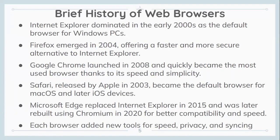Brief history of web browsers: Internet Explorer dominated in the early 2000s as the default browser for Windows PCs. Firefox emerged in 2004, offering a faster and more secure alternative to Internet Explorer. Google Chrome launched in 2008 and quickly became the most used web browser thanks to its speed and simplicity. Safari was released by Apple in 2003 and became the default web browser for Mac OS and later iOS devices. Microsoft Edge replaced Internet Explorer in 2015, and was later rebuilt using Chromium in 2020 for better compatibility and speed. Each browser added new tools for speed, privacy, and syncing.